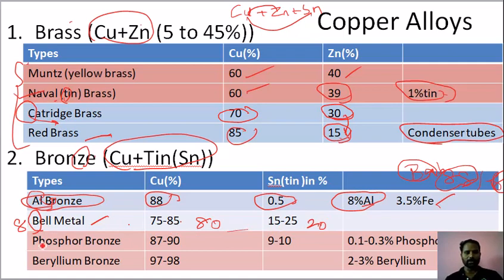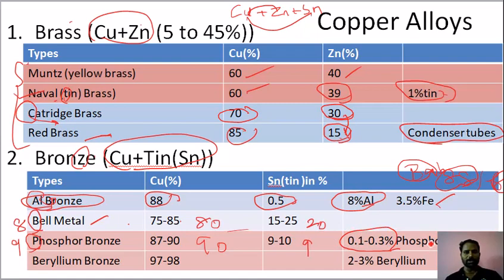Next, phosphorus bronze. We have P — this is 9. So around 90% copper, 9% tin. Remaining 0.1 to 2.3% phosphorus. This is approximate. This is phosphorus bronze.